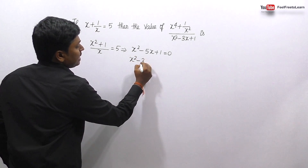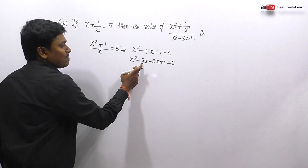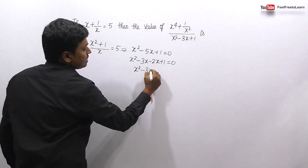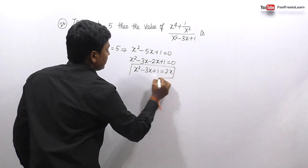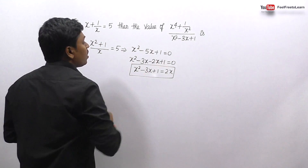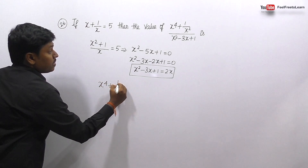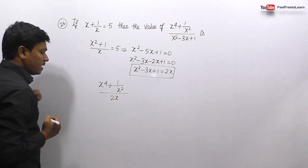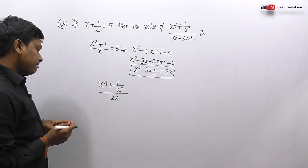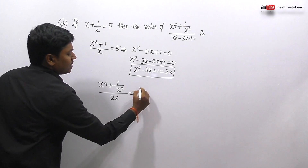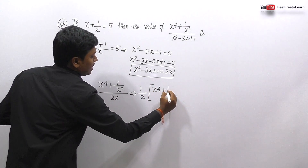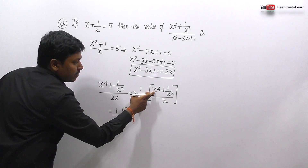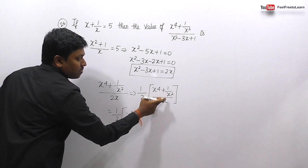Now the expression becomes (x⁴ + 1/x²) / (2x). Factoring out 2 gives (1/2) · (x⁴ + 1/x²)/x = (1/2)(x³ + 1/x³). This is now in the form (1/2)(a³ + b³) where a = x and b = 1/x. Using the identity a³ + b³ = (a + b)³ - 3ab(a + b).